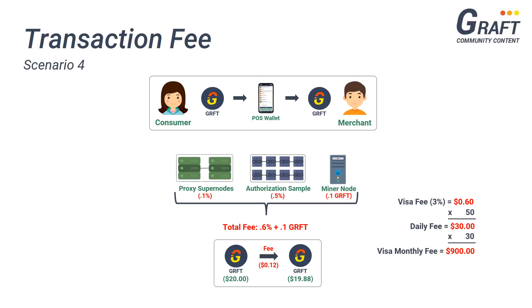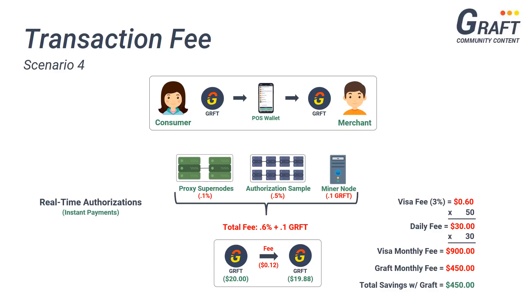Even at the max Graft transaction fee of 1.5% — with the option of accepting any cryptocurrency and receiving payout in US dollars — Graft is still a better option. Please remember that all of these scenarios involve processing a transaction using Graft's real-time authorization feature, which is mostly suitable for the retail environment. Graft can also be used for sending cryptocurrency payments in the more traditional way, in which the sender pays an even smaller transaction fee. Additionally, Graft will allow users to transfer Graft completely free by simply proving their identity to the network using zero-knowledge proof authentication technology, without the user having to compromise their privacy.